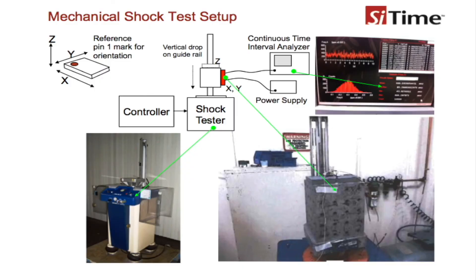It is important to understand how electronic components perform in the presence of shock. Because the frequency of oscillators can vary when exposed to shock, Sidetime commissioned a third-party test lab to measure the effect of shock impact on oscillator performance using the test setup as shown in this slide. A continuous time interval analyzer was used to measure oscillator output frequency in 100 microsecond time windows continuously for 10 to 15 seconds.